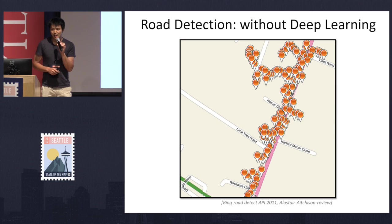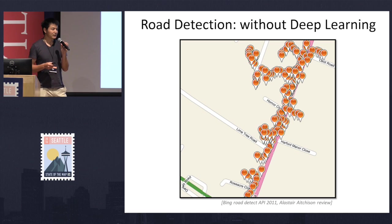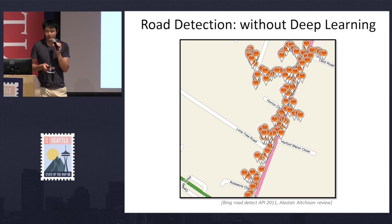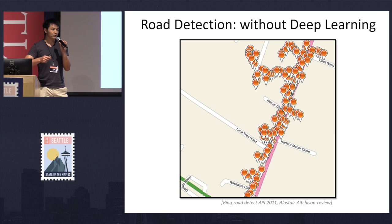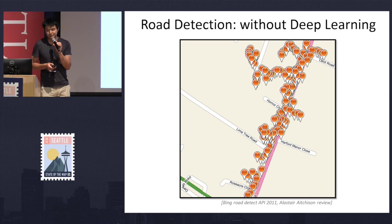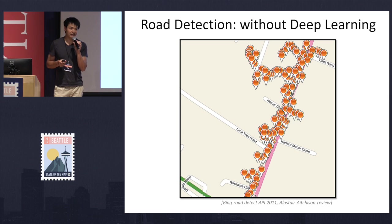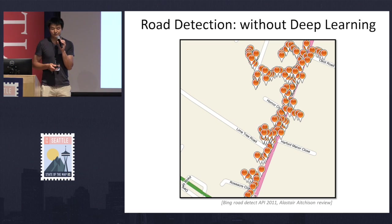To give you some idea about how deep learning can make a difference, this is the Bing road detect API that was integrated into JOSM more than five years ago. Basically, this API's goal is — given a start and end point — to detect the main road connecting those points as well as branches alongside the road. You can see it does an okay job detecting the main road, but not so good detecting those branches. This was published before the first deep learning paper, so I assume it wasn't using deep learning.